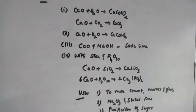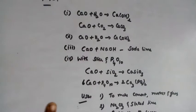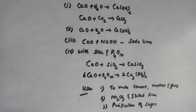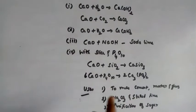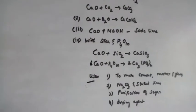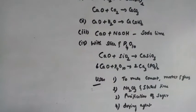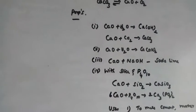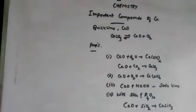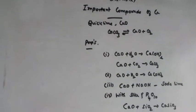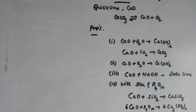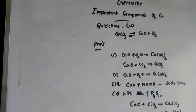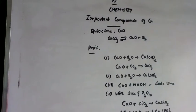The uses of quicklime include making cement, mortar, and glass, as well as the manufacture of sodium carbonate. Slaked lime, which is calcium hydroxide, is used in the purification of sugar and as a drying agent. With this we complete today's class. In tomorrow's class we will continue with calcium hydroxide, gypsum, and plaster of Paris. Thank you students.